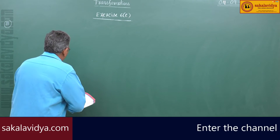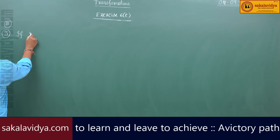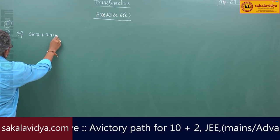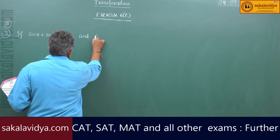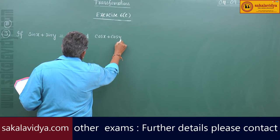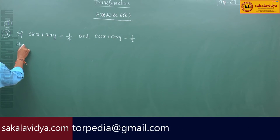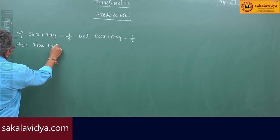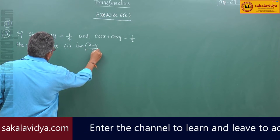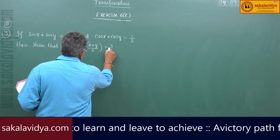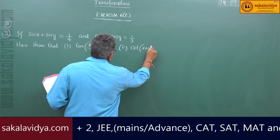Third problem. If sin x plus sin y equals 1 by 4 and cos x plus cos y equals 1 by 3, then show that: first, tan of (x plus y) by 2 equals 3 by 4; second, cot of (x plus y) equals 7 by 24.